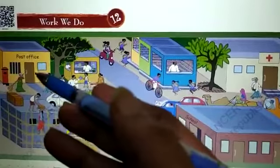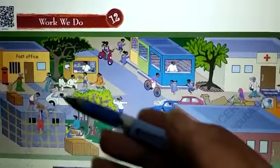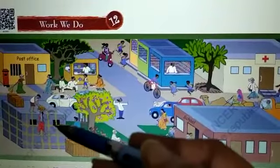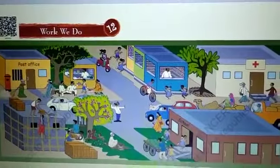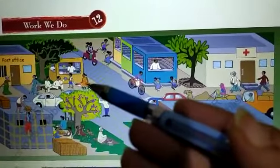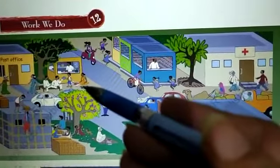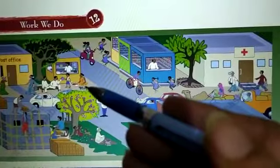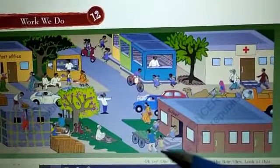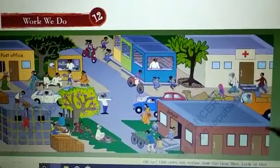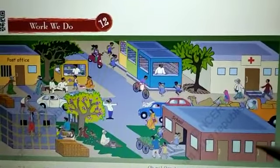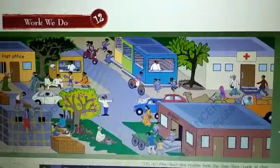Post office is for posting letters. And you can see people preparing a building. Police, policemen, flower-selling women, and a fruit seller are also shown. Different people and works are completed in this picture.